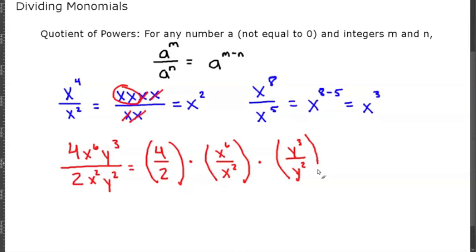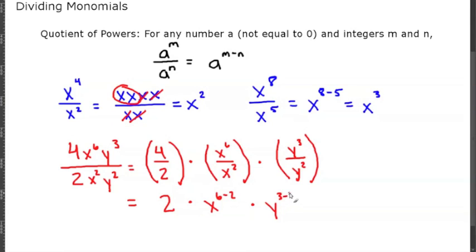Four divided by two is just two. X to the sixth over x squared is x to the 6 minus 2. Y to the third over y squared is y to the 3 minus 2. That gives us 2 times x to the 4th — because 6 minus 2 is 4 — times y to the 1, which is just y. So the answer is 2x to the fourth y.